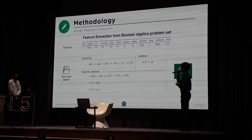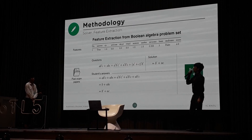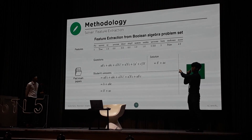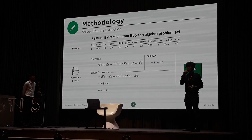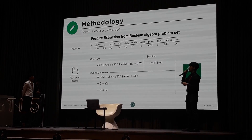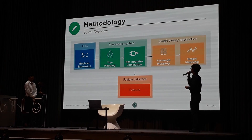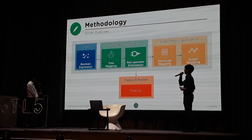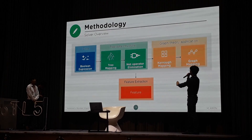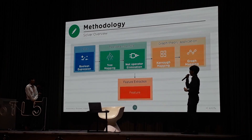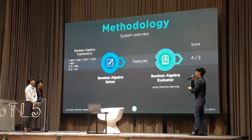Here is an example of a question on the left side, with the student's answer and the solution on the right side alongside the score. At the top is the list of features that our solver can extract — answer, checkpoint, process, and so on. After the solver extracts features from the student answer, we feed them into the machine learning model. The solver overview is: the data (Boolean algebraic expression) is converted using a tree data structure to enable computation, then processed through graph theory application, yielding a list of features in the feature extraction stage.